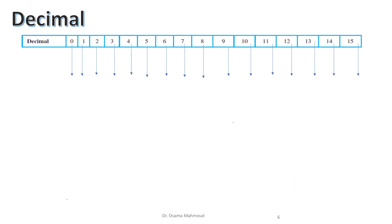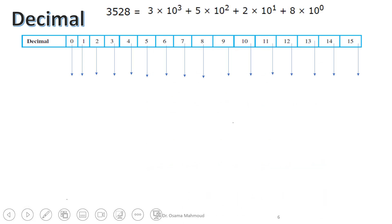Now, how can we write a decimal number using the base of the decimal? We can write each digit multiplied by the appropriate power of 10. The units place is times 10 to the power of 0. The tens place corresponds to 10 to the power of 1, giving you 20. The hundreds place is 10 to the power of 2, so you multiply by that. The thousands place is 10 to the power of 3.